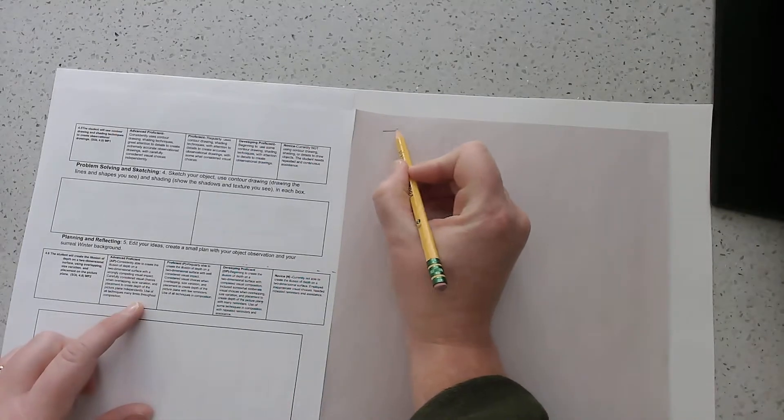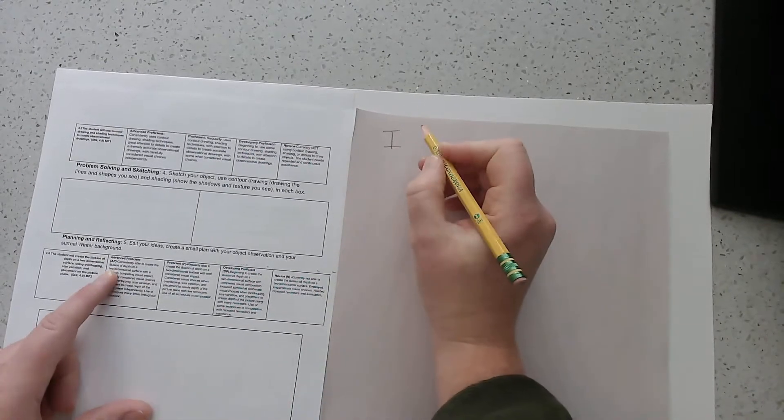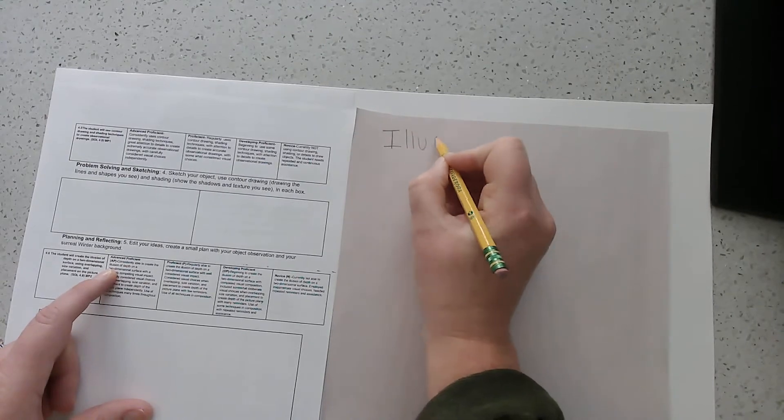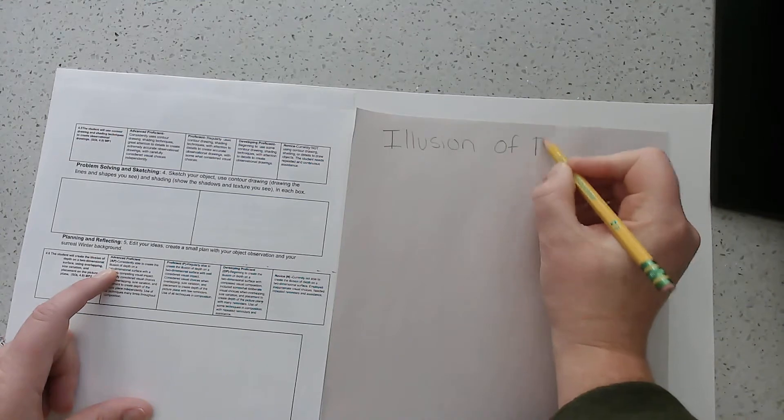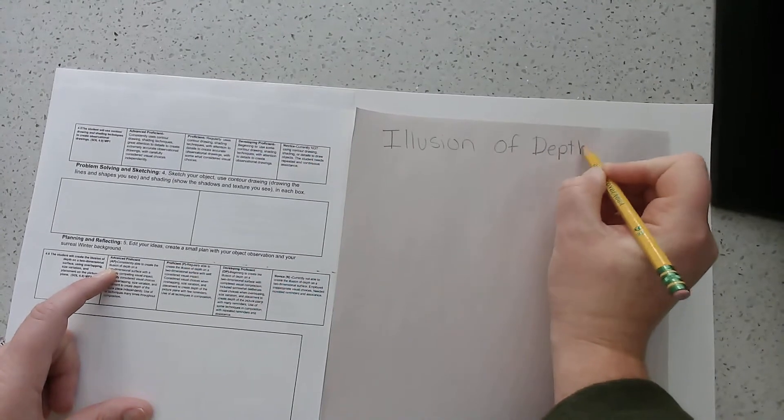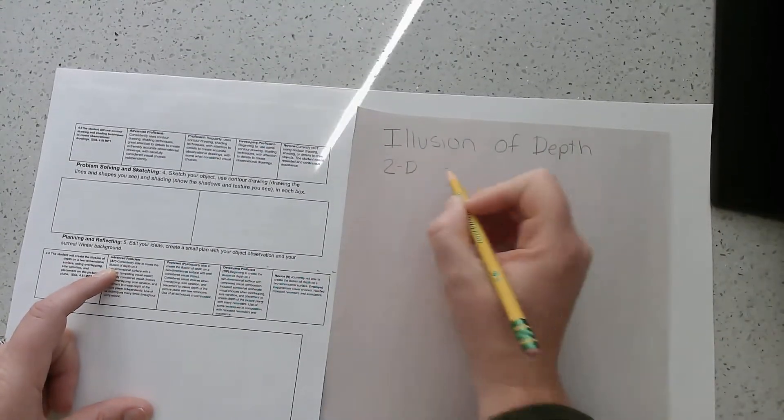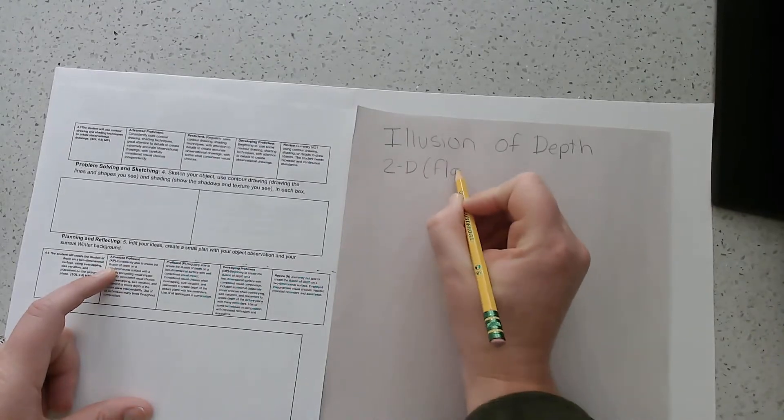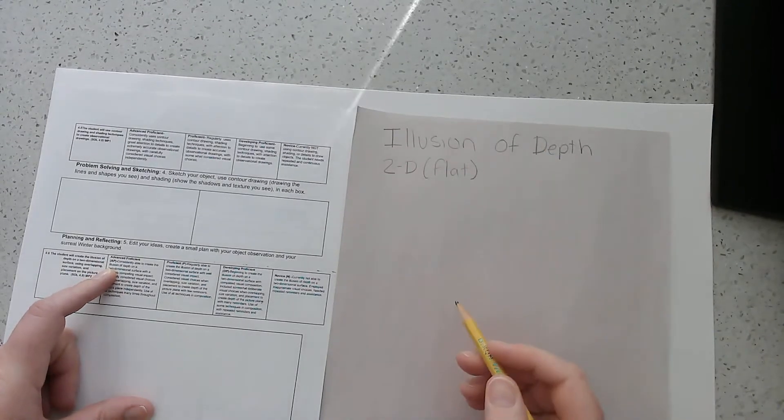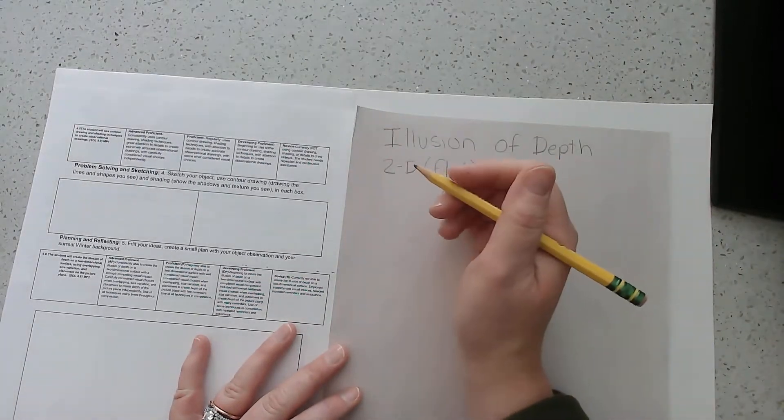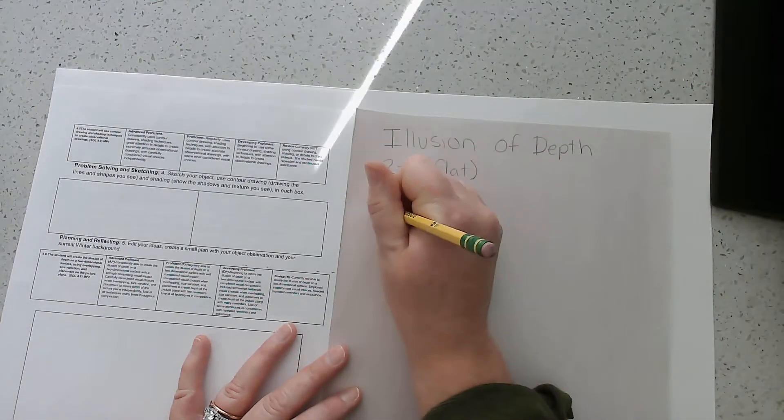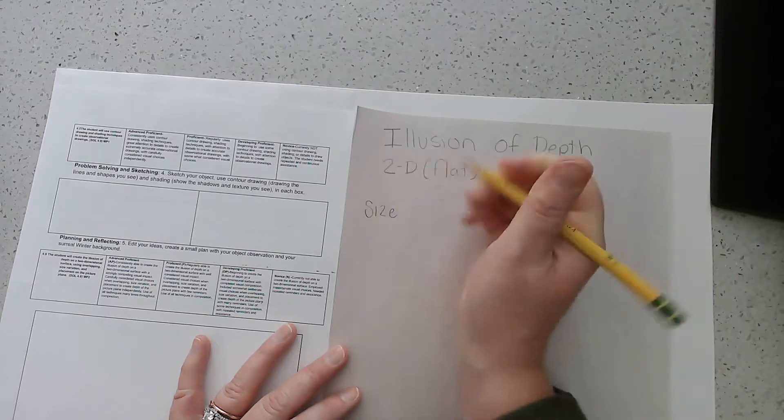So the illusion of depth—D-E-P-T-H—on a two-dimensional or flat surface. So the first way we're going to focus on is size variation.